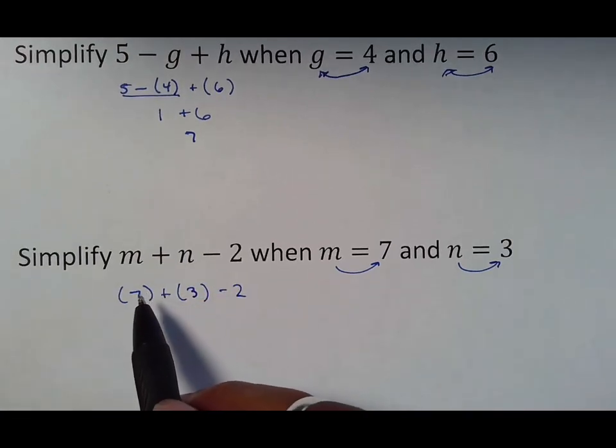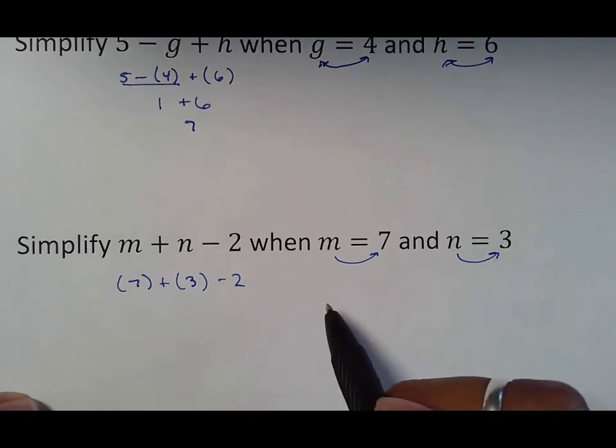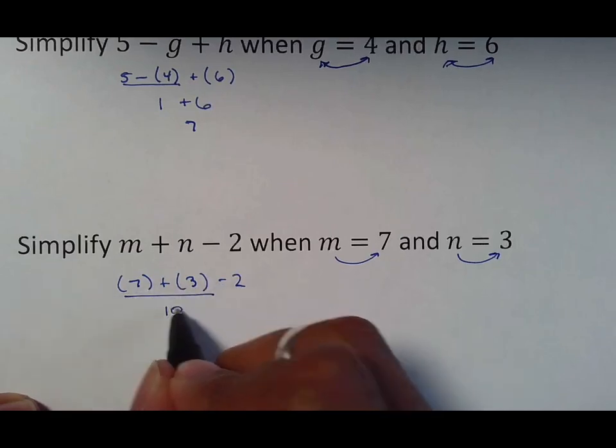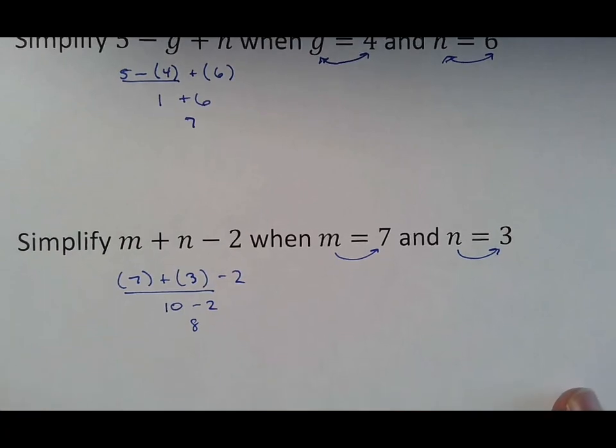From there, I have pretty much, again, there's nothing around these parentheses. So it just says 7 plus 3 minus 2, which means, do the addition first. 7 plus 3 is 10. 10 minus 2 is 8. That is the answer.